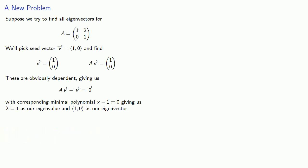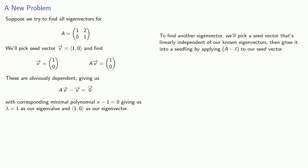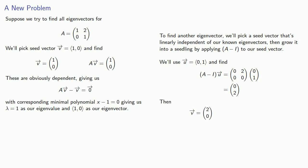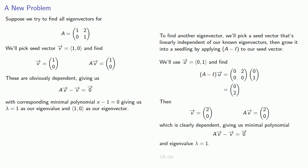Since this is a 2×2 matrix and can have up to 2 linearly independent eigenvectors, we'll see if we can find another one. To find another eigenvector, we'll pick a seed vector that's linearly independent of our known eigenvectors, then grow it into a seedling by applying (A minus I) to our seed vector. We'll use u equals (0, 1), then apply (A minus I) to u to get our seedling vector. Applying A again gives an obviously dependent set, which gives us a new minimal polynomial and a new eigenvalue lambda equals 1.